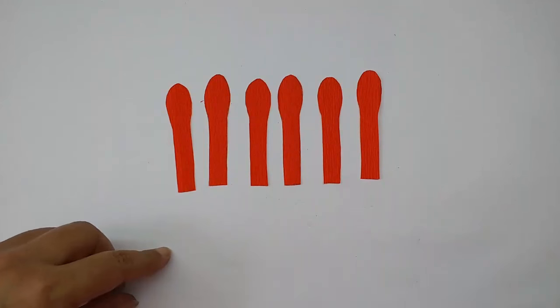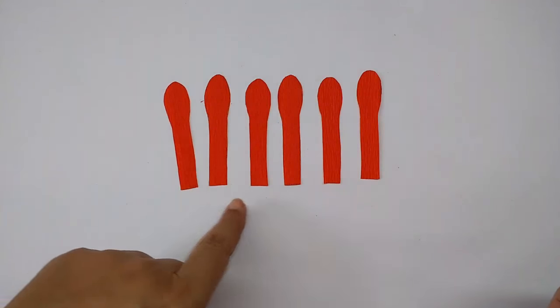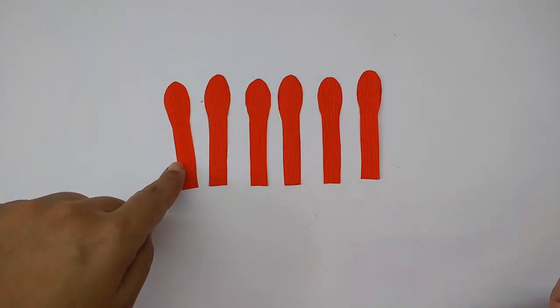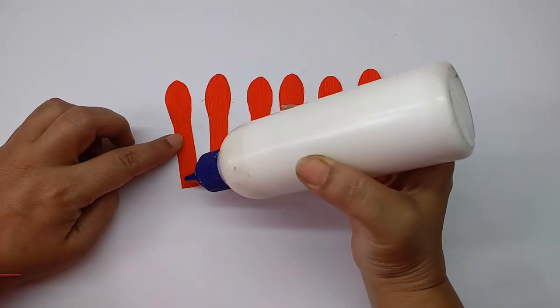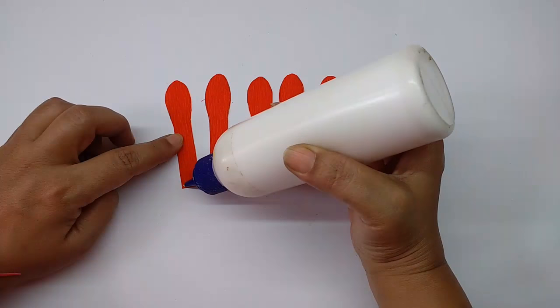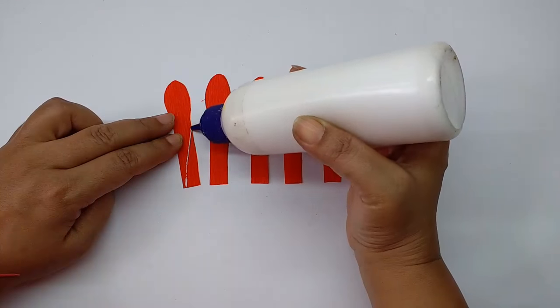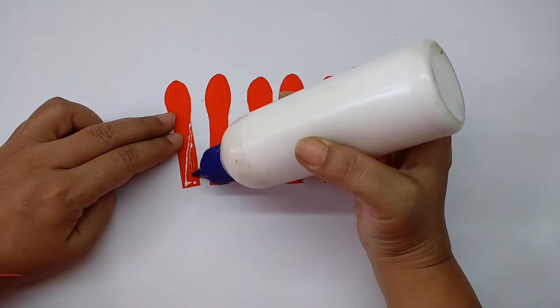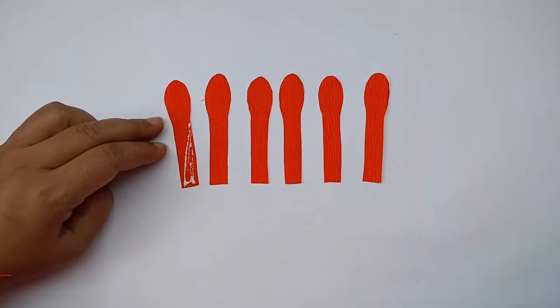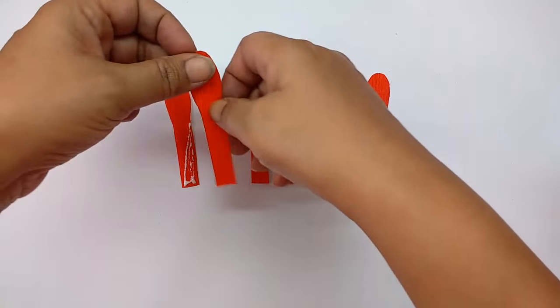Take the six petals and put them alternately, so you have petal A, petal B, petal A, petal B. First apply glue on the first petal in a triangular form and stick the second petal on it at an angle.